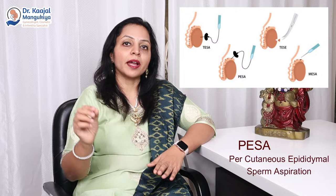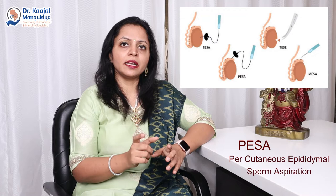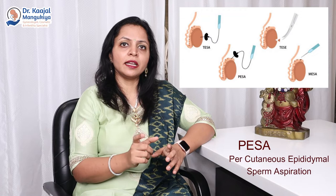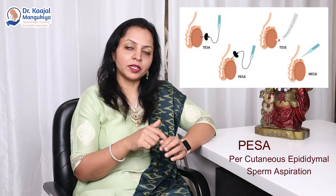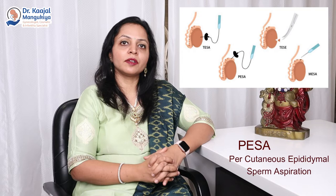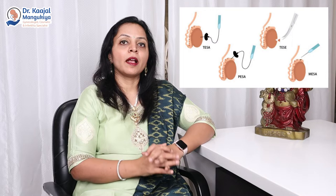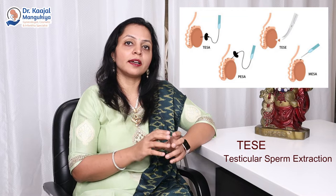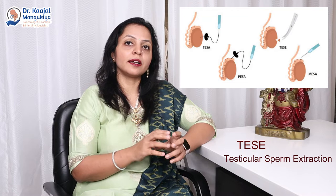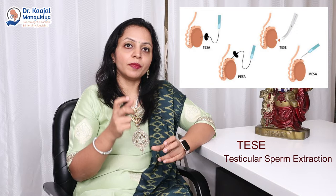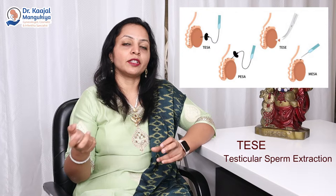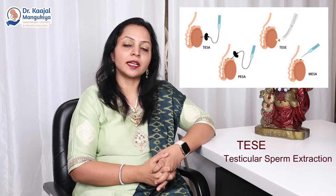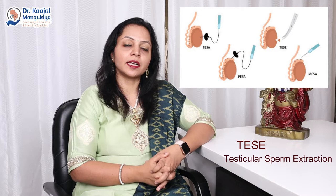The second procedure is PESA — Percutaneous Epididymal Sperm Aspiration. This procedure is characterized by general anesthesia, and in this procedure the testes often yields a larger mass of sperm. The sperm can be used for IVF or ICSI treatment, or it can be frozen, so that when the patient's IVF cycle starts, we can do the IVF or ICSI procedure with the frozen sperm.